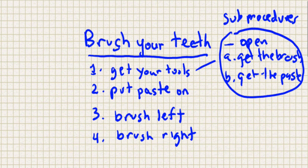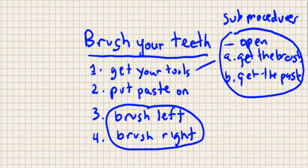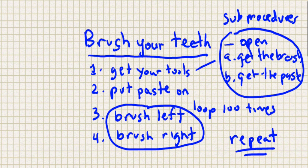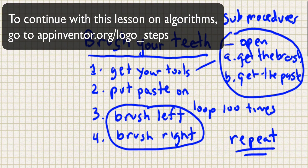A lot of times your instructions don't just do something once — you want to loop through it, you want to iterate. Like brush left and right — I tell my son a hundred times, loop a hundred times. You need to be able to repeat operations. We're going to go over algorithms, procedures, and iteration — repeating — and how you can do that in an App Inventor app and in coding generally.